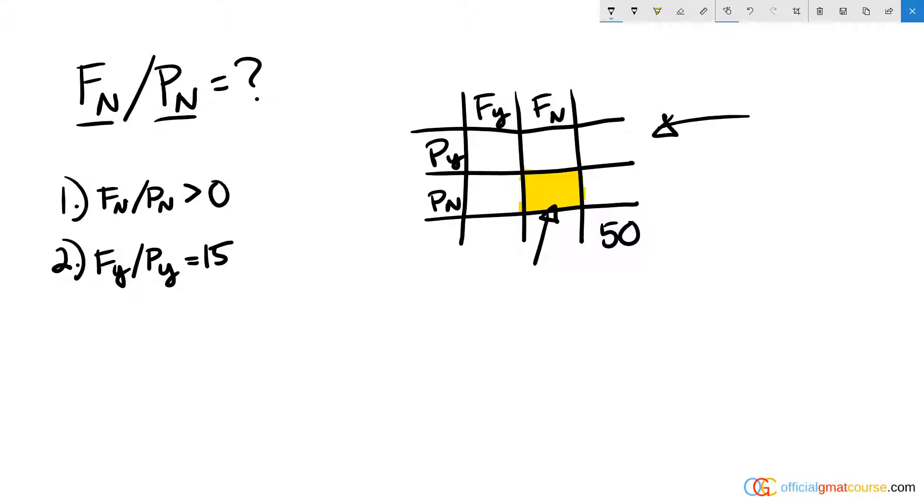So looking at statement one, basically what statement one is telling us is that the number we're looking for is greater than zero, because the total number of people who own a fax machine or a laser printer or both would be a fax machine but not a laser printer, a printer but not a fax machine, and then both would be like here.